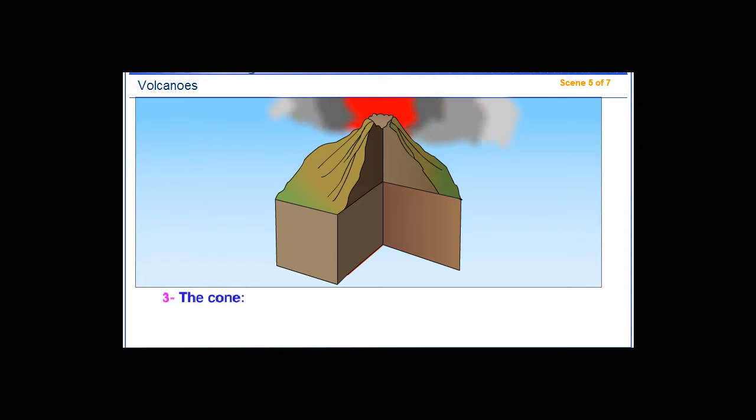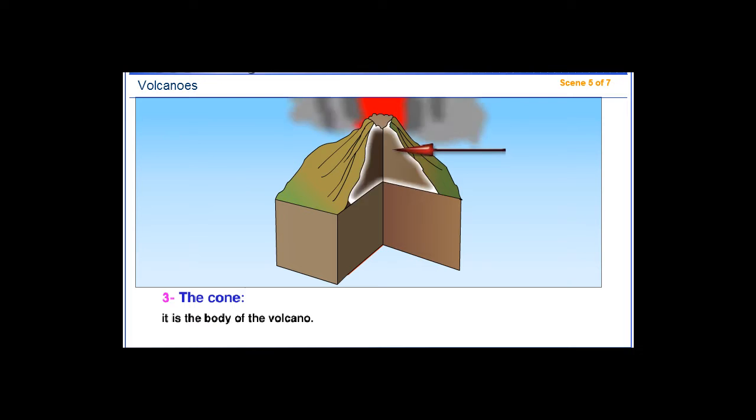Third, the cone. It is the body of the volcano. It consists of the molten materials after their solidification and accumulation around the volcanic vent.